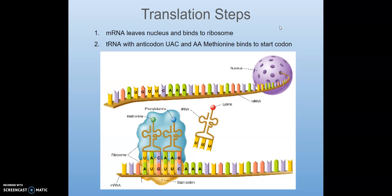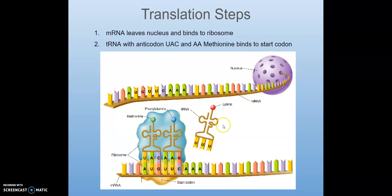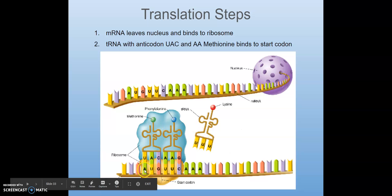What are the steps to translation? First, the mRNA is going to leave the nucleus and bind to the ribosome. Here the mRNA is coming out and now it's going to bind to the rRNA, or the ribosome. Next, the tRNA with an anticodon — that's what we call this three-base-pair sequence on the tRNA — is going to match up with the mRNA with the complementary pair.